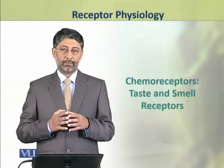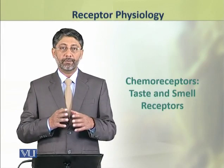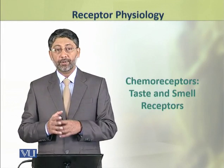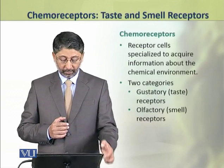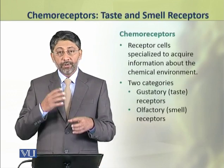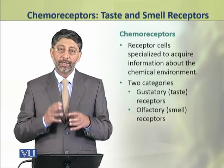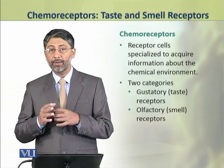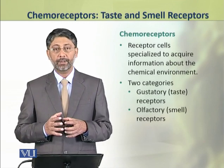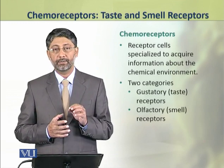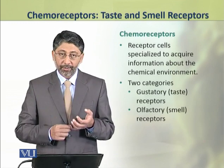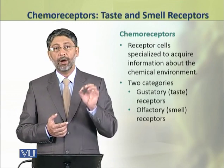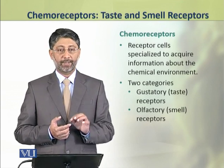Dear students, in this topic we shall discuss chemoreceptors, which include the receptors for taste and smell. The chemoreceptors are the cells which are specialized to acquire information about the chemical environment. There are two categories of chemoreceptors: first are the gustatory receptors, i.e. taste receptors, and the second category includes the olfactory receptors, i.e. smell receptors.